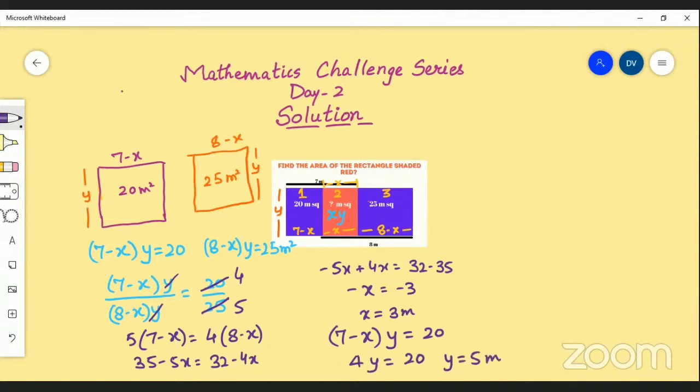Now area of the red portion, it is equal to x into y meters square. That is x is 3 and y is 5, so your answer came out to be 15 meters square.